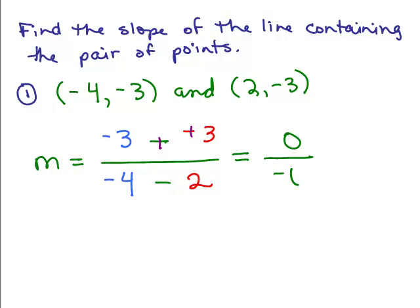All right, what's 0 divided by negative 6? 0. Hey, when does that happen? When do you get a slope of 0? Do you remember? That's the horizontal line.